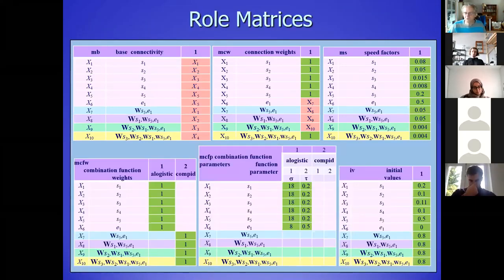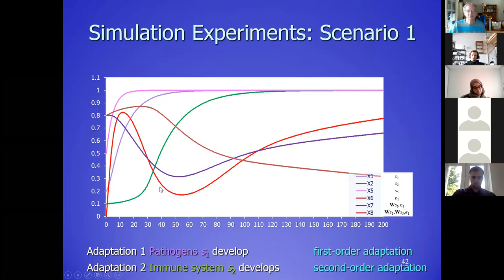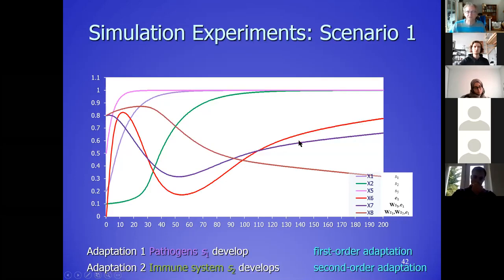In this first simulation the immune system develops, and here the pathogens develop. The red one is the health — initially you are in good health. Then the pathogens come in — these are the purple ones — and your health goes down. This goes over many years and really over different individuals, but in later generations that type of individual has this functioning. Then the immune system comes in and health goes up again — a positive story that ends well.